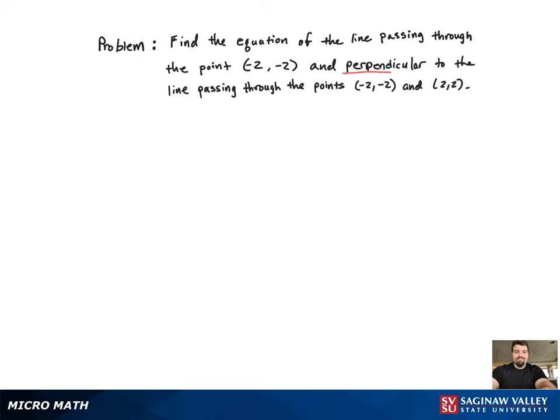The first thing we want to do is find the slope of the perpendicular line and then use that information to find our slope. So we're going to use the two points that it goes through, (-2, -2) and (2, 2), to find the slope of that line.